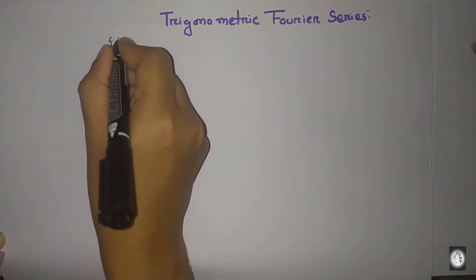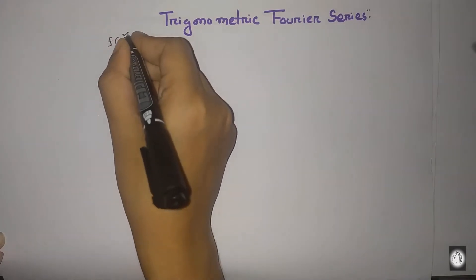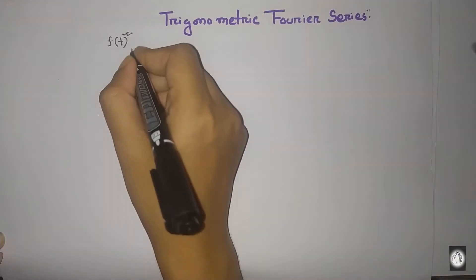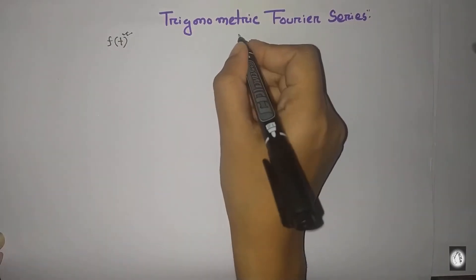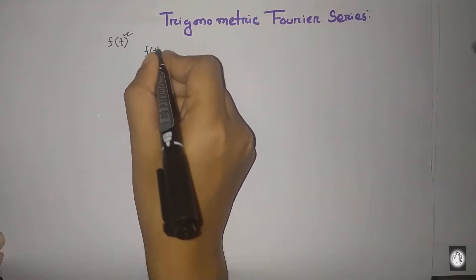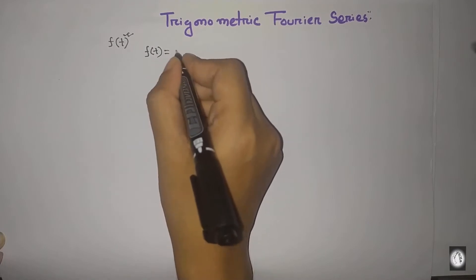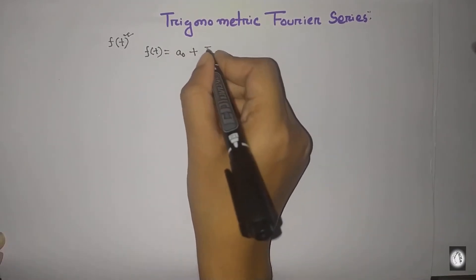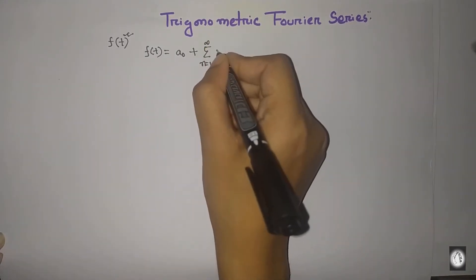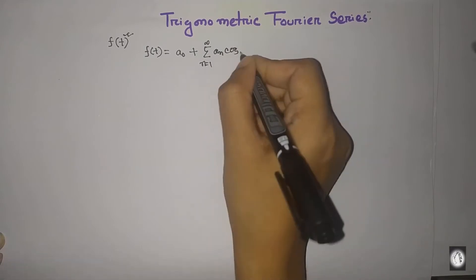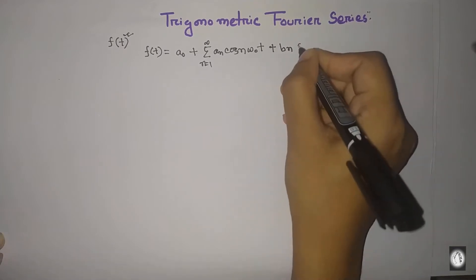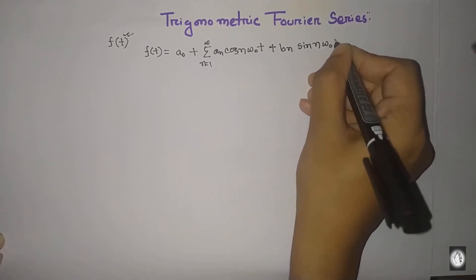This function is the periodic function — this condition will be fulfilled. Therefore, this function will expand the trigonometric Fourier series in the form: a_n cos(nωt) plus b_n sin(nωt).